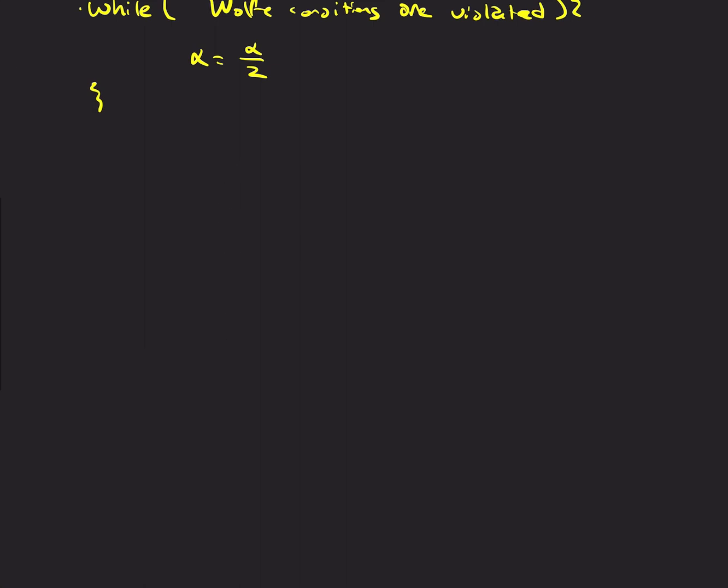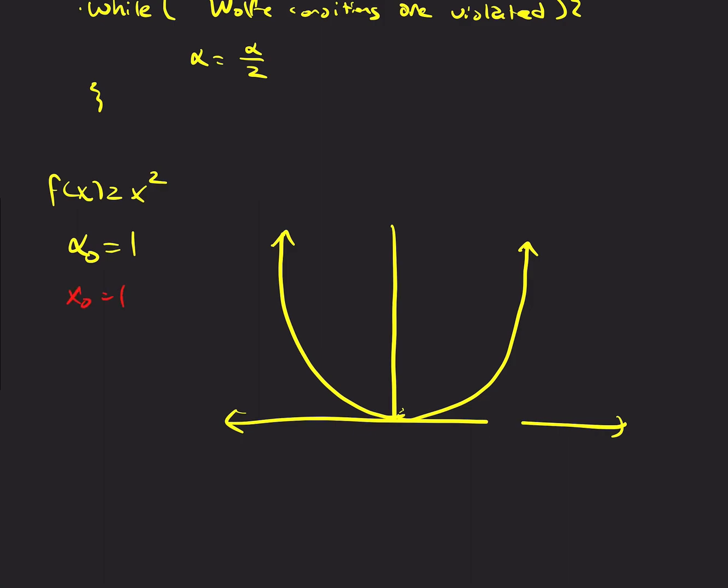So, let's see how this backtracking works for the example from the previous video with f(x) equals x squared. And we choose α_0 to be one. So, if you recall, when we did this, if we chose a fixed step length, and we're choosing x_0 equals one, we chose this fixed step length, what ended up happening was, we bounced to negative one, and the negative one sent us right back to one, and so on, and we never converged.